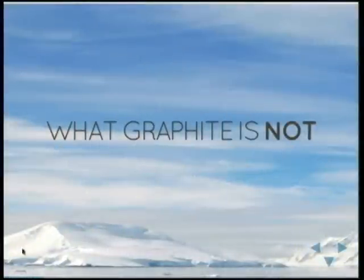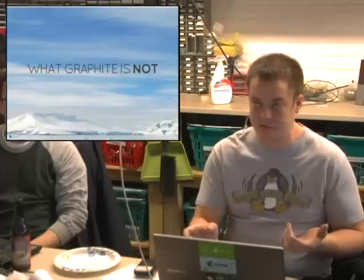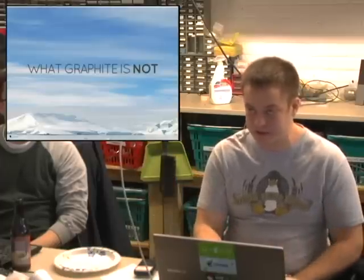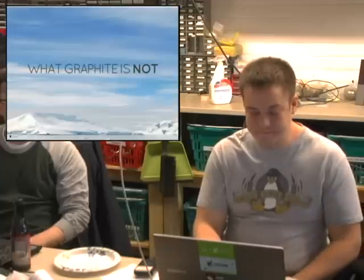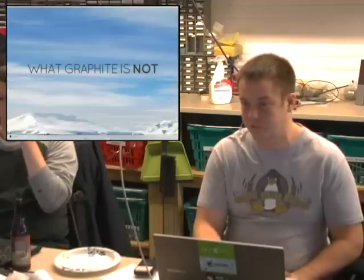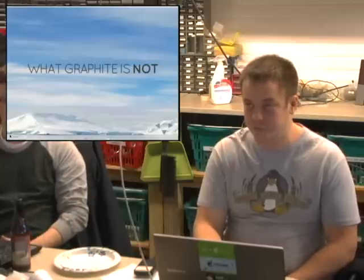Graphite is not a replacement for something like Logstash and Elasticsearch. It's not designed for text data. You give a metric a name and it has a value, and that value has to be a number — not a JSON document you shove in MongoDB. It's not a logging tool; it's a metric tool. That's what a lot of people sometimes forget about it.